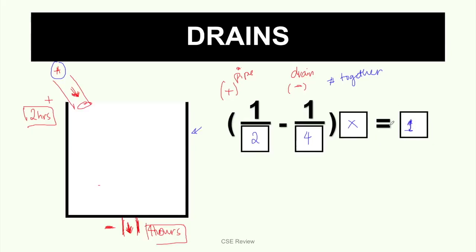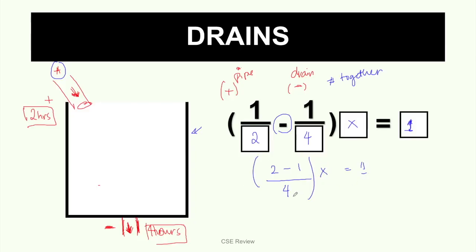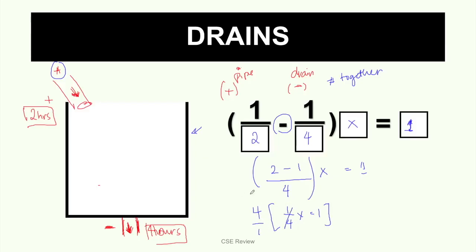If two tanks need to be filled, this becomes 2; if three, then 3. But for now, that is the equation. We're going to solve it the way we did before — just be careful because this part is minus. Find the LCD of 2 and 4, which is 4. So 1/2 becomes 2/4, minus 1/4, times x equals 1. That gives us 1/4 x equals 1. Multiply both sides by the reciprocal, which is 4/1. So x equals 4 hours — that is your answer.